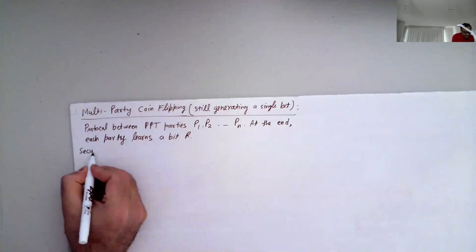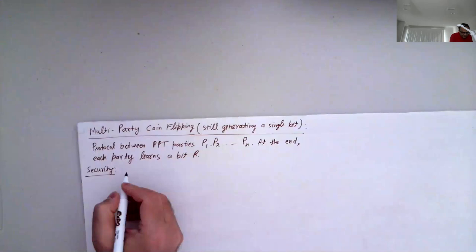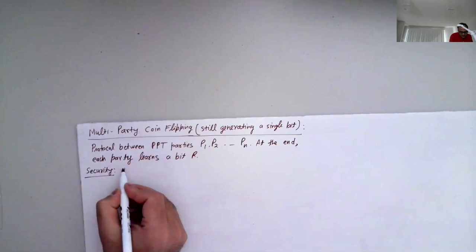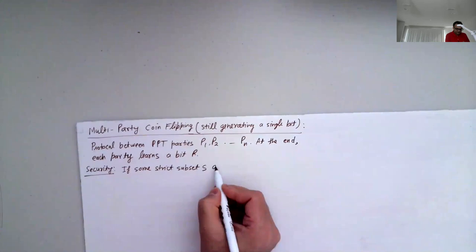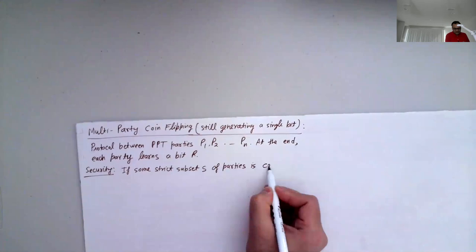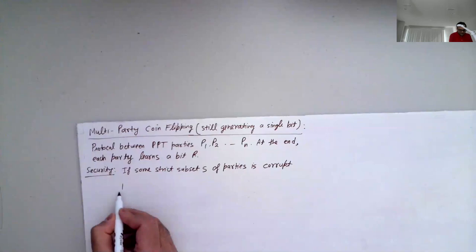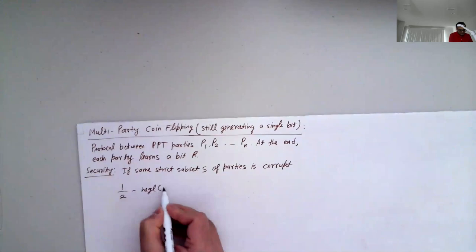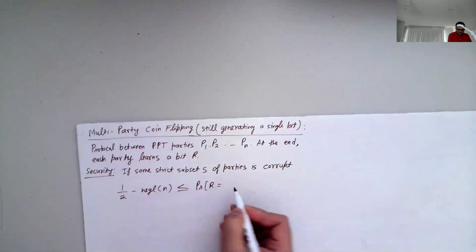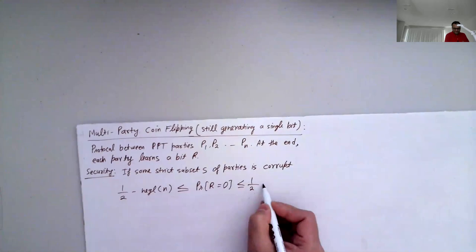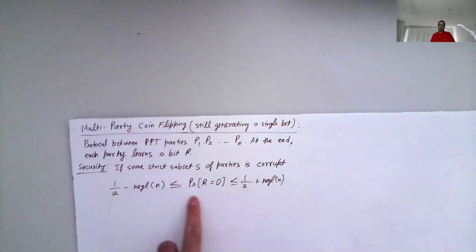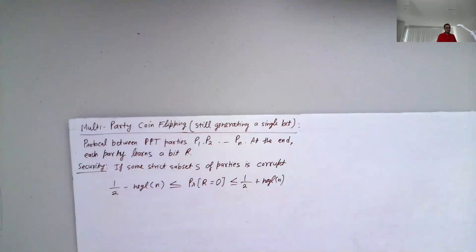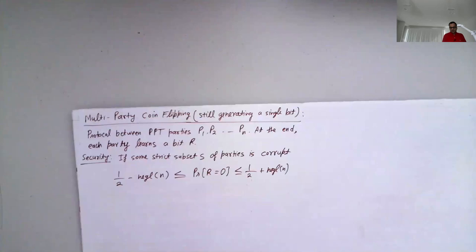Security definition: if some strict subset S of parties is corrupt, we still want Pr[R=0] to be very close to one-half. Formally, Pr[R=0] < 1/2 + negligible, and Pr[R=1] < 1/2 + negligible.